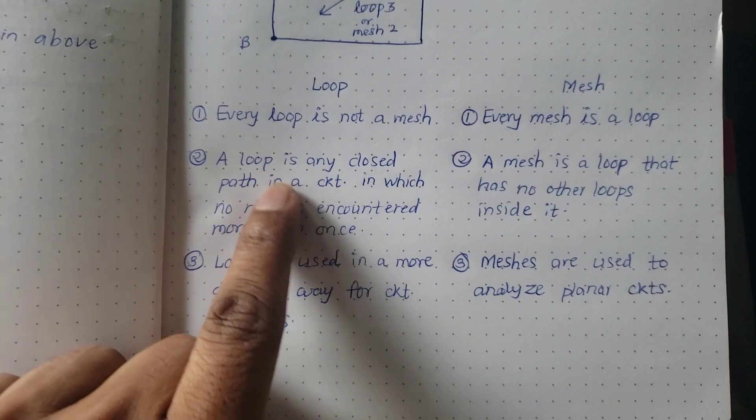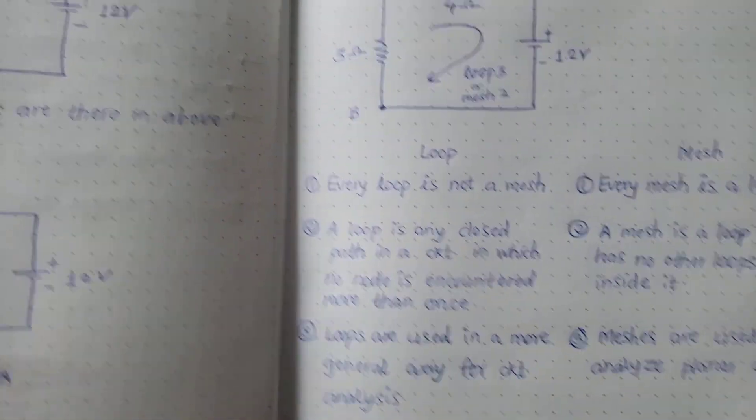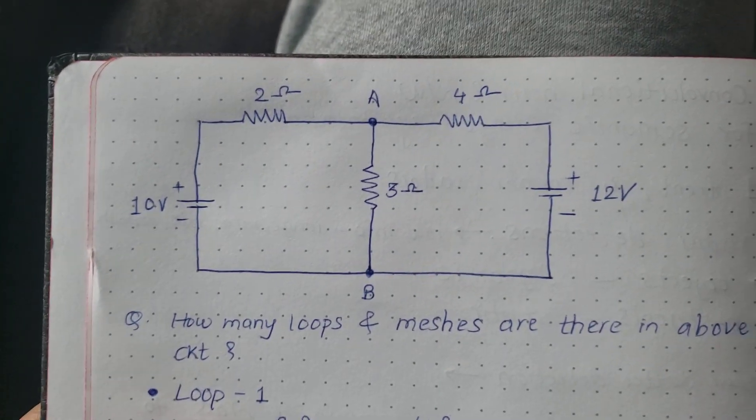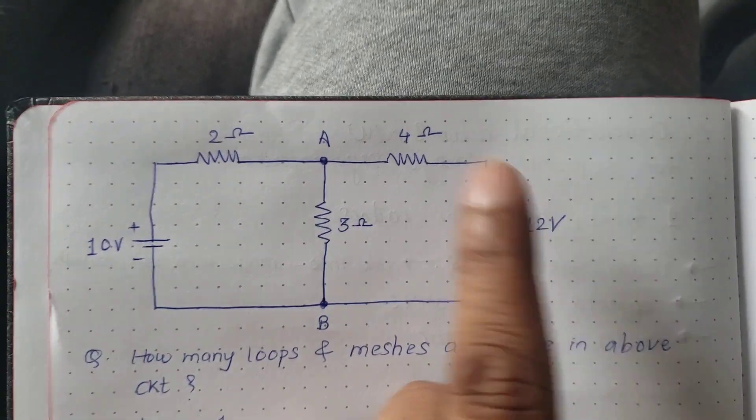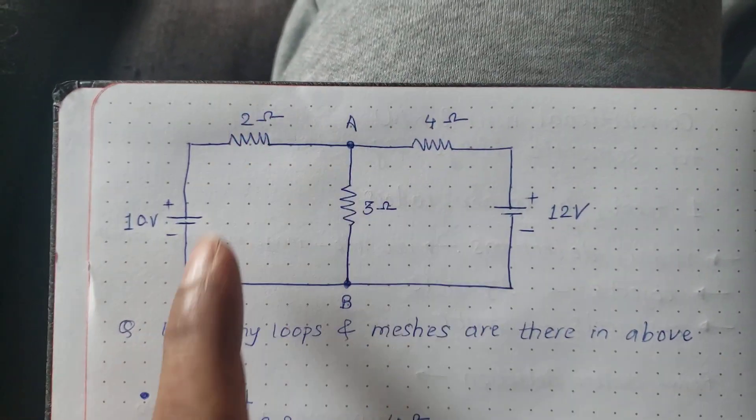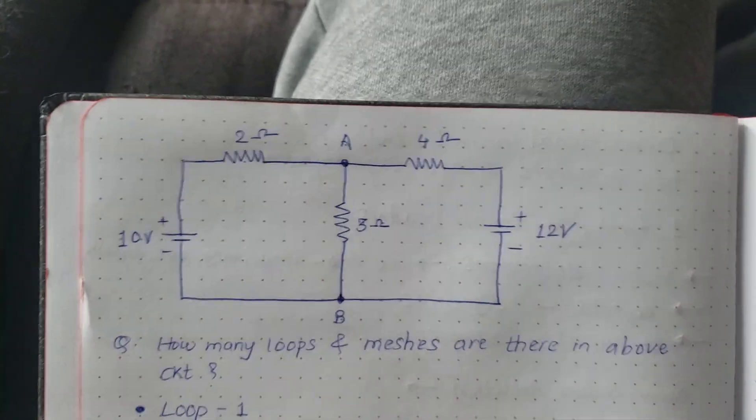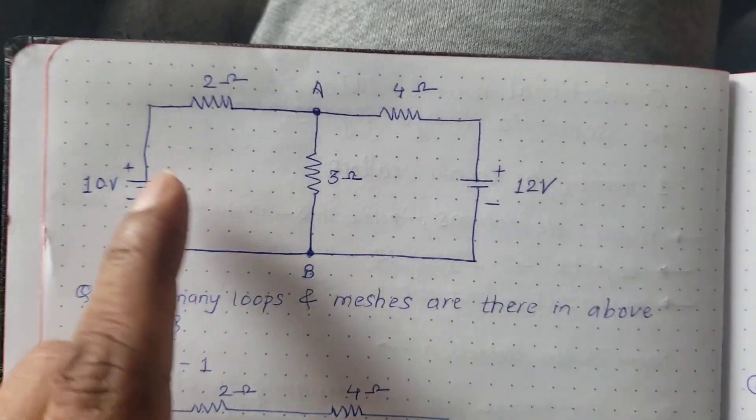So to explain this let me show you a circuit. If you can see this circuit here we have two batteries and three resistances. Which one can be called as a loop?